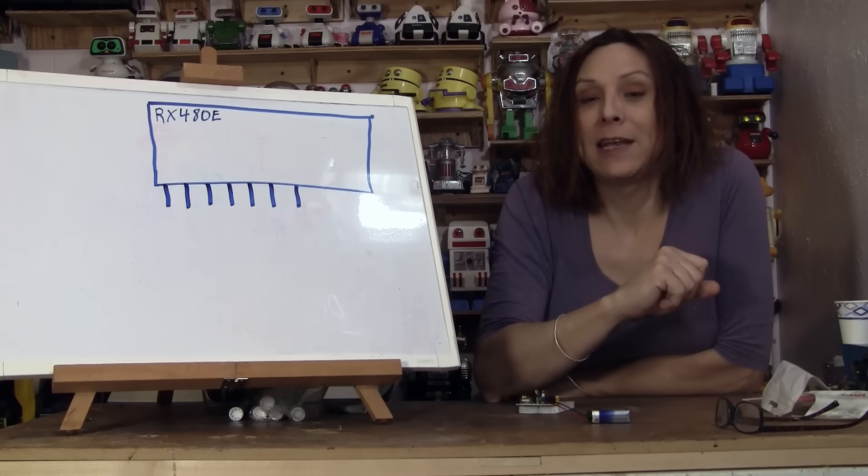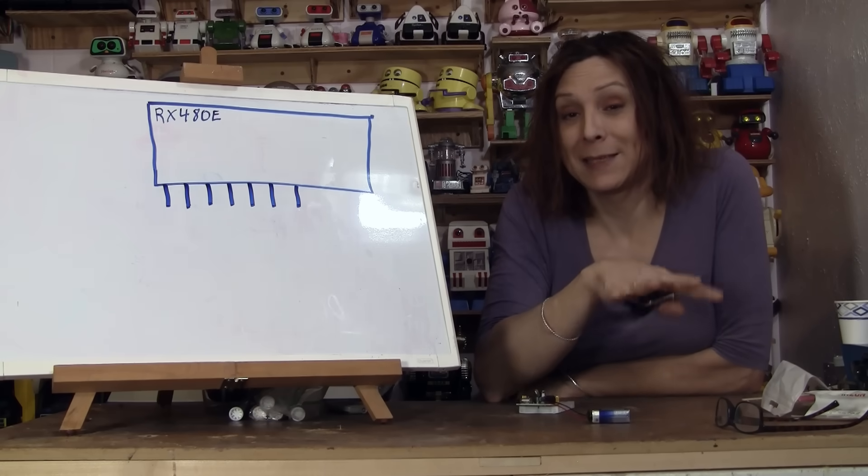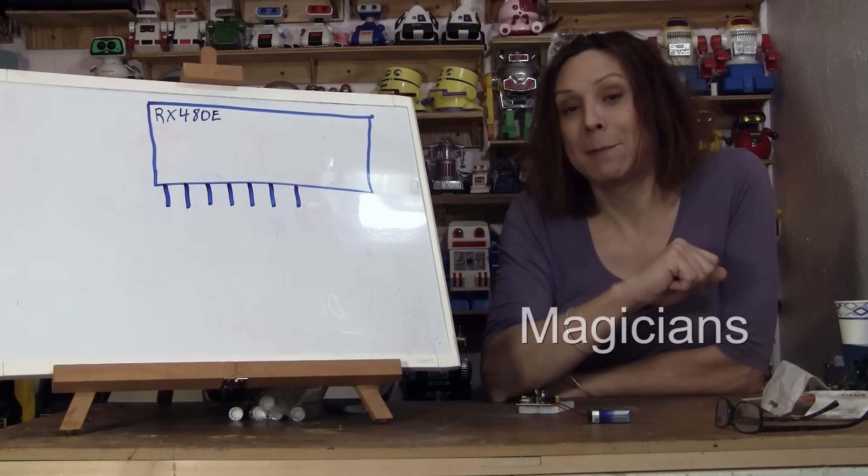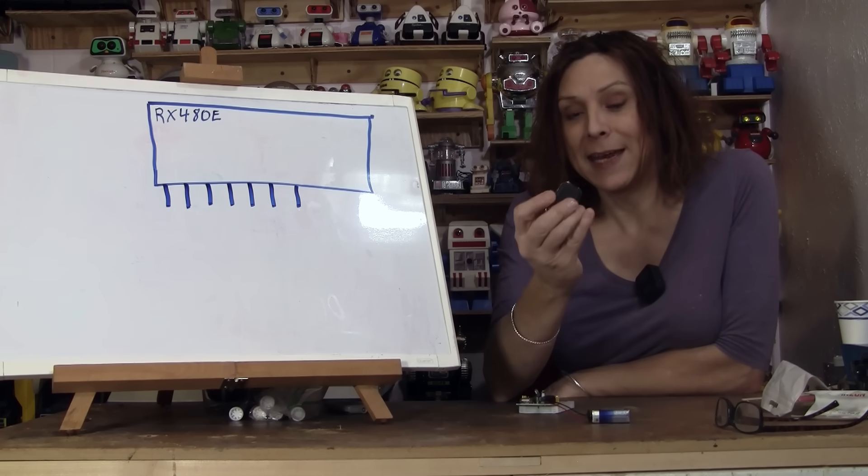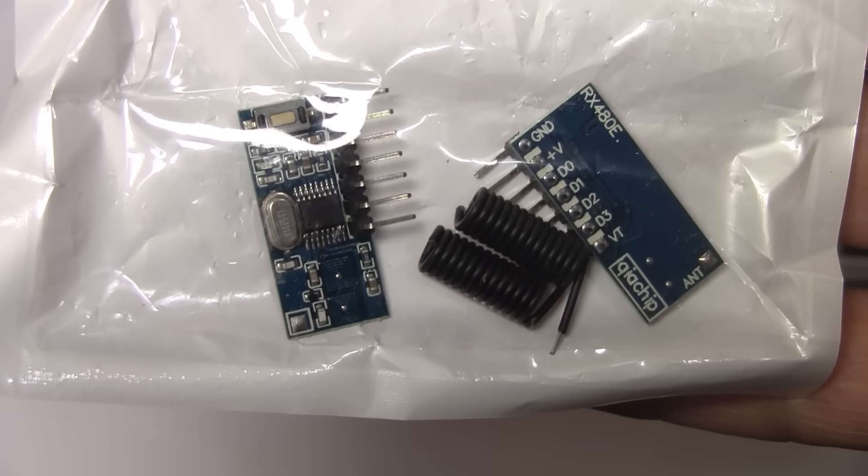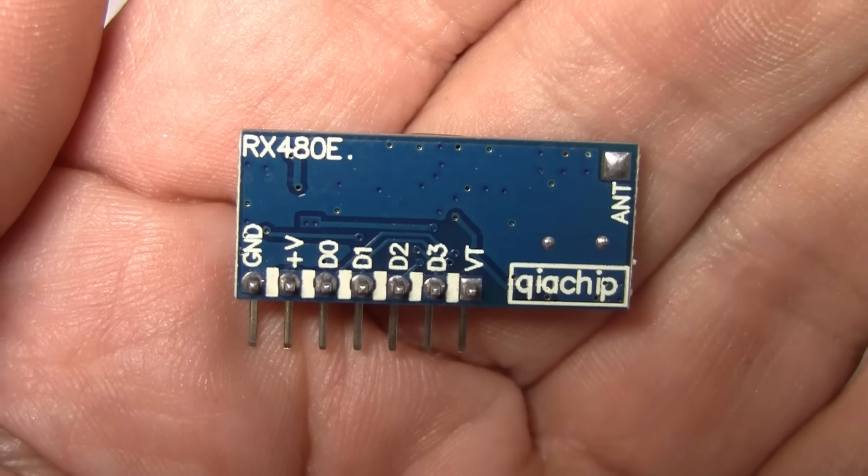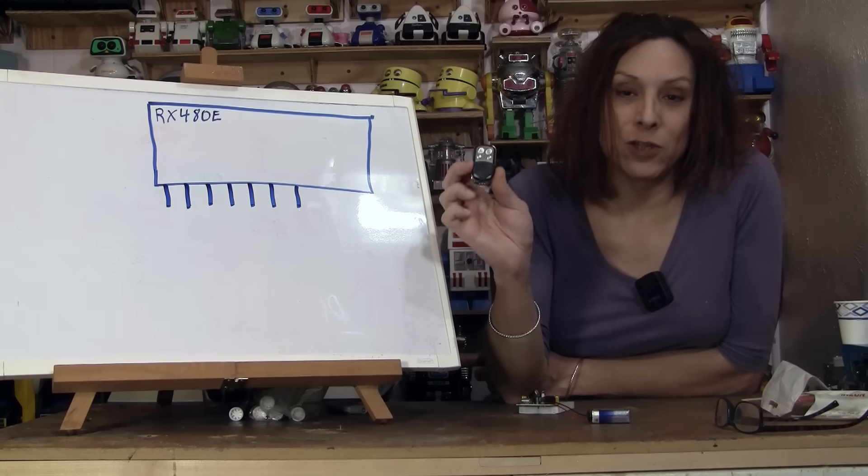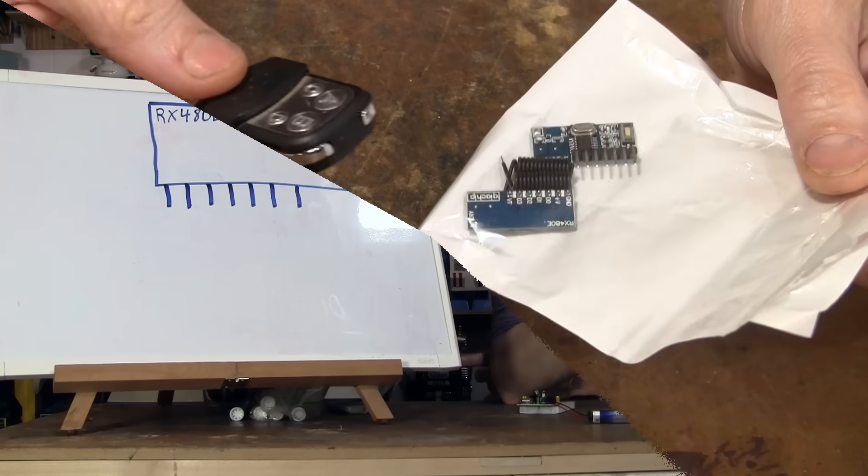Hello, Randy Rain here and this is a video that I've been wanting to make for quite some time now and a certain group of people have been wanting me to make this as well and that is how to make something remote control. More precisely, it's how to make something remote control using the RX 480E receiver and these four channel key fobs. So let me get started.